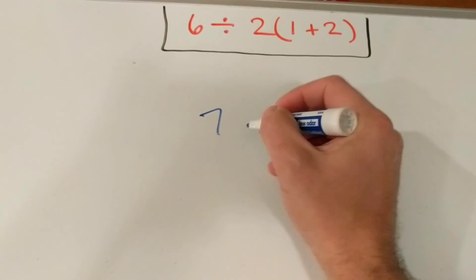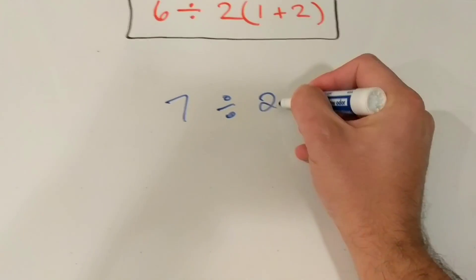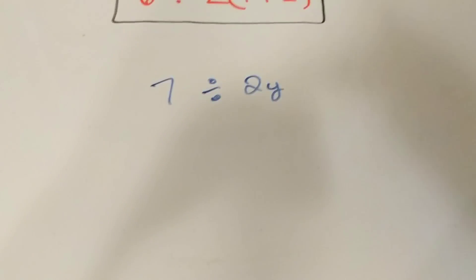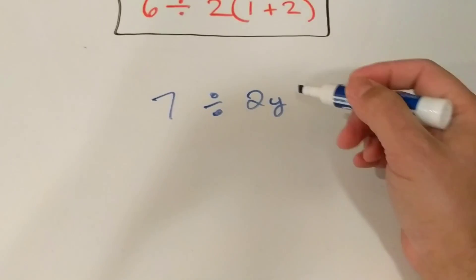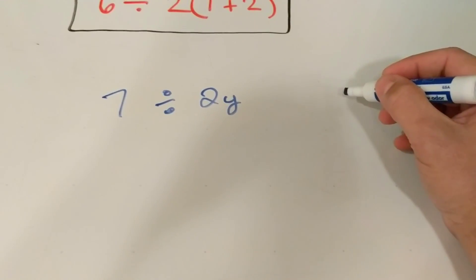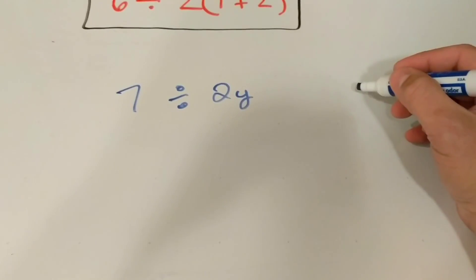Just like if I was to say 7 divided by 2y, that could be a u, that could be an x or anything. And y could represent a variable. It could be unknown or known. It could be part of a function.